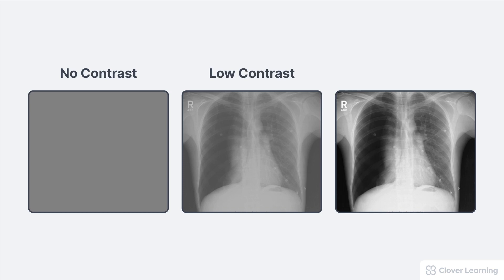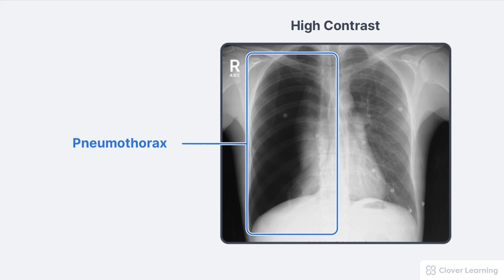The second image has low contrast — there are some differences in brightness level, but the difference is very small. The third image has high contrast. There are obvious differences in brightness levels between structures, and now we can see something we couldn't see in the other images. In this last image, high contrast allows us to see there are no lung markings in the right lung field. This patient has a condition called pneumothorax.